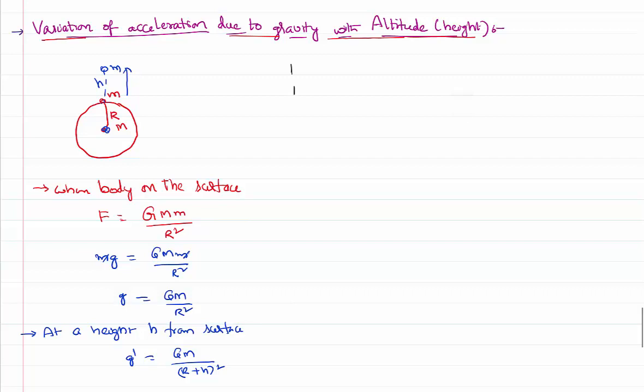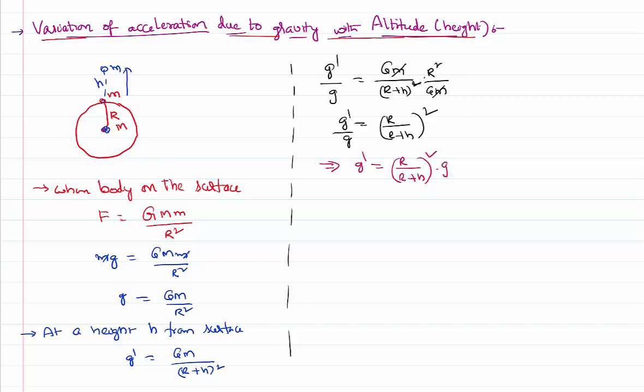Now I want to compare the new acceleration due to gravity at a height with respect to the original. So g dash by g is GM by R plus h whole squared divided by GM by R squared. GM and GM cancel. So R squared by R plus h whole squared is g dash by g. Therefore g dash equals R by R plus h whole squared into g. This is the final equation we can use.